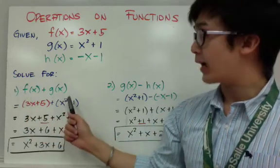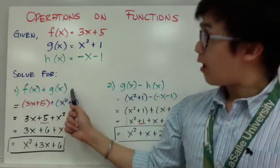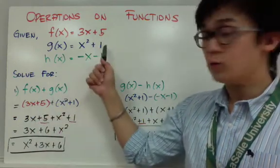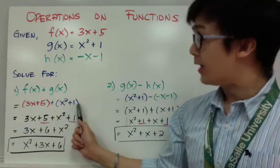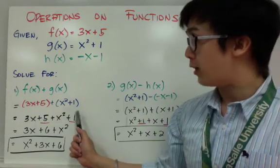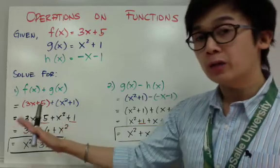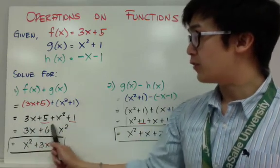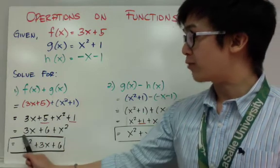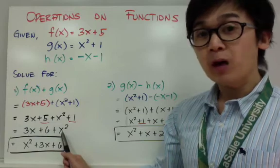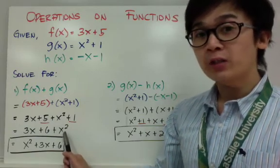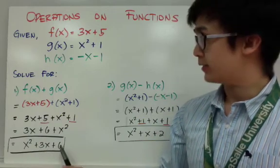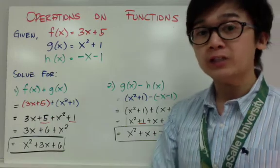If you have f of x plus g of x, all you have to do is use f of x, which is 3x plus 5, and add it to g of x, which is x squared plus 1. This is similar to a polynomial plus another polynomial. Getting rid of the parentheses, you have 3x plus 5 plus x squared plus 1. Combining like terms gives 3x plus 6 plus x squared. In standard form, the answer is x squared plus 3x plus 6.